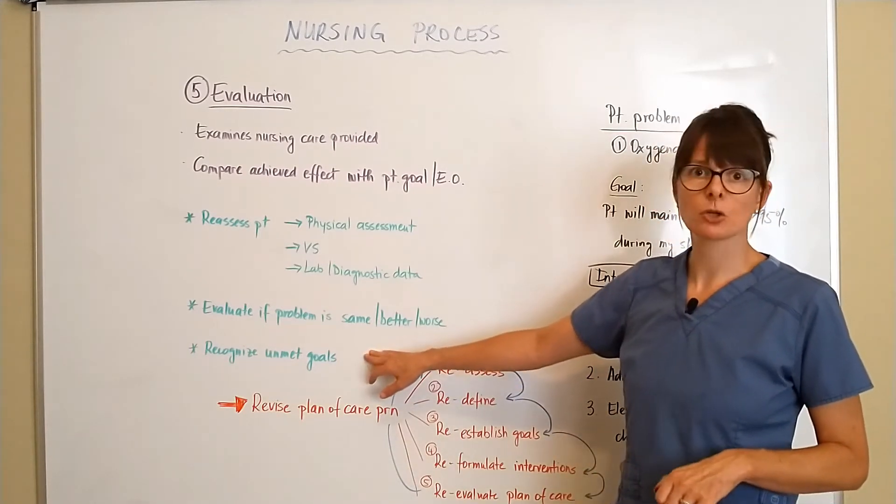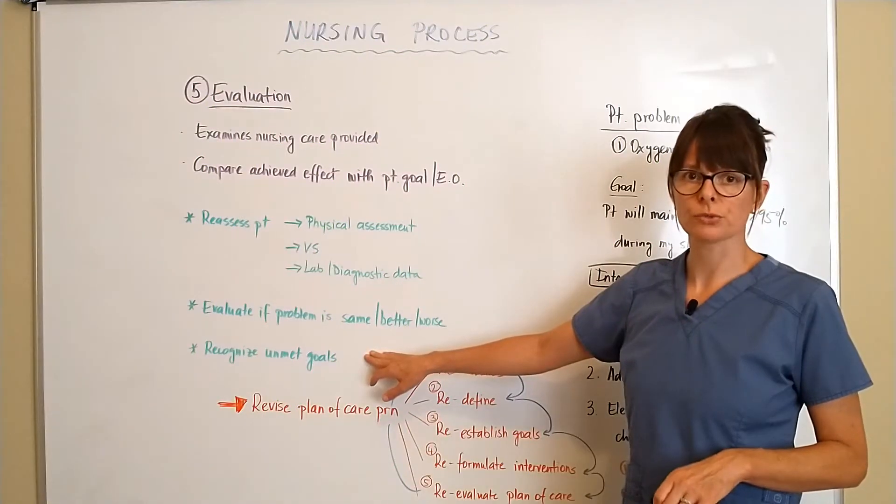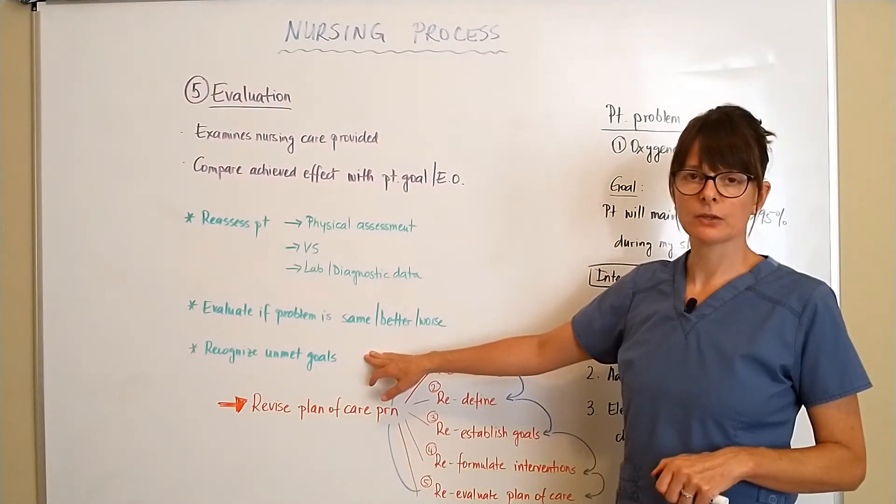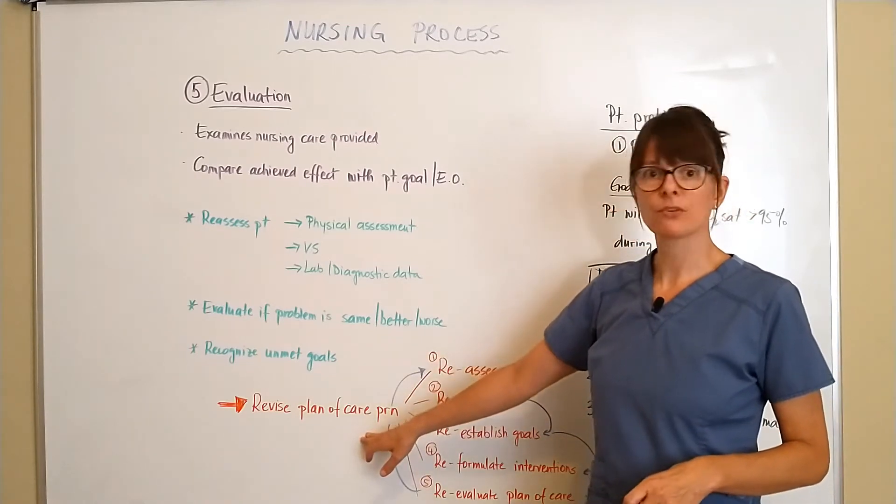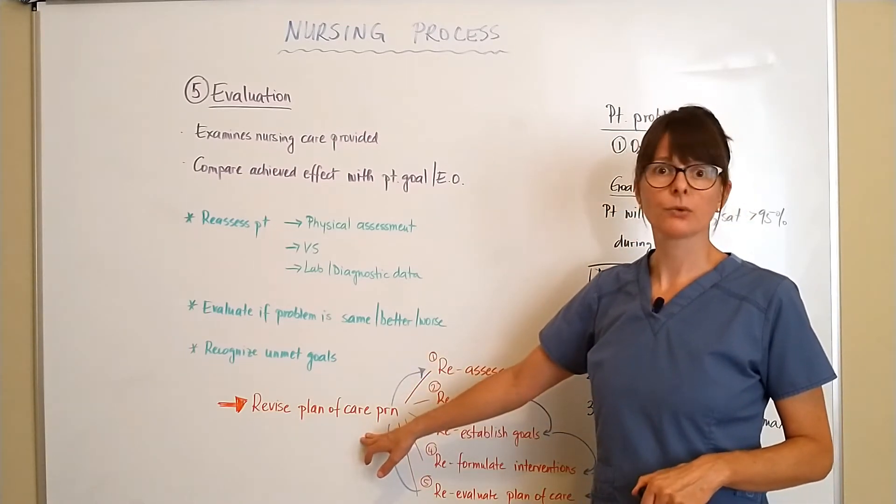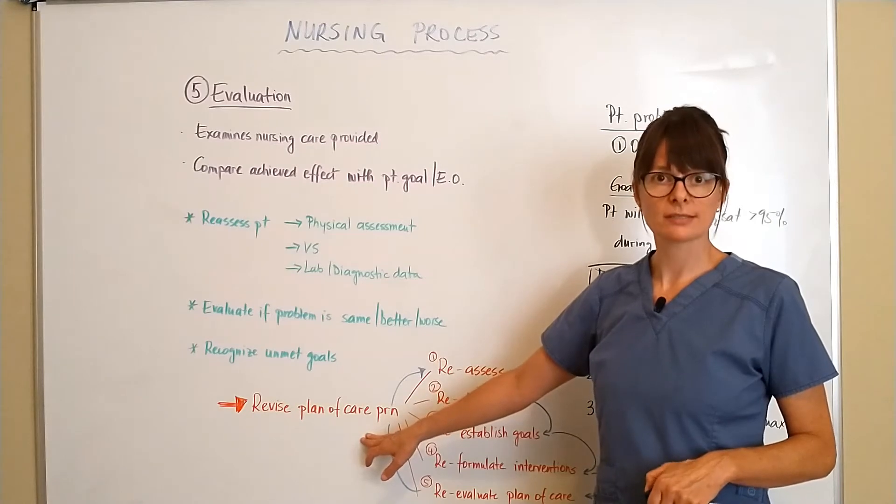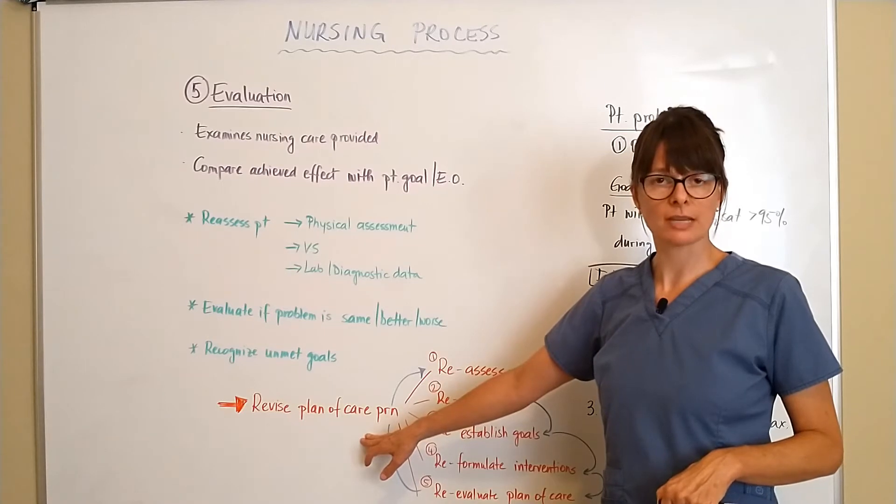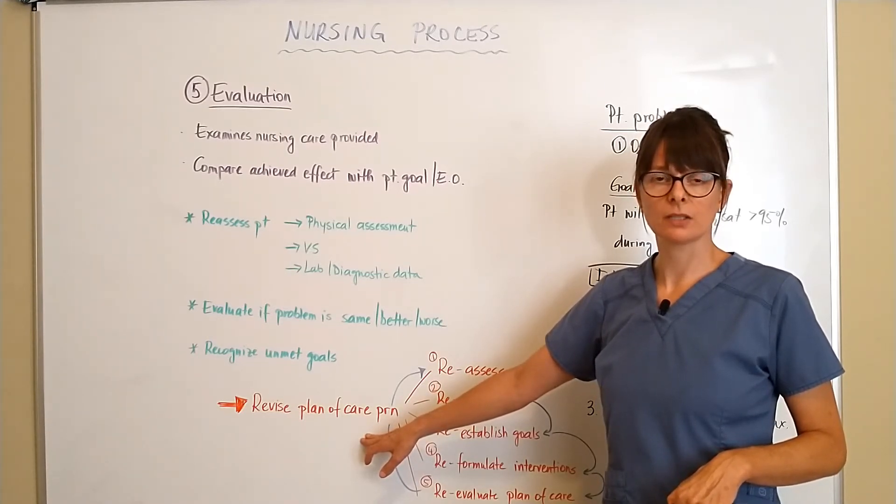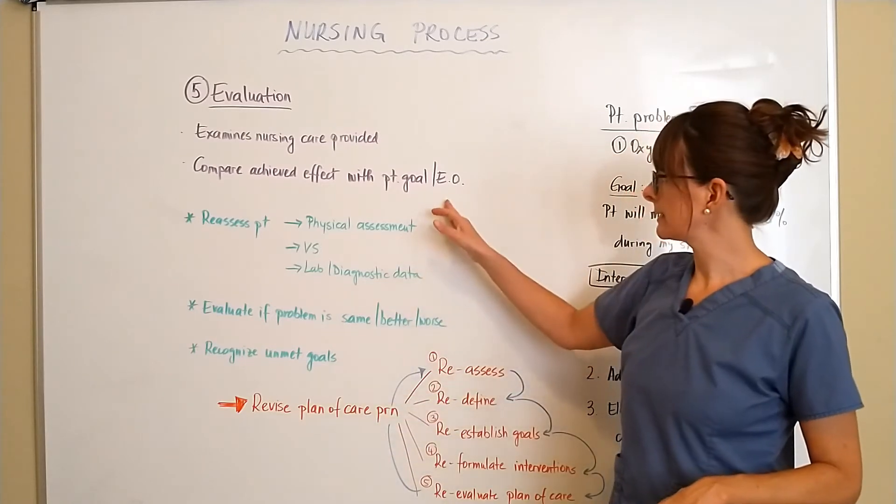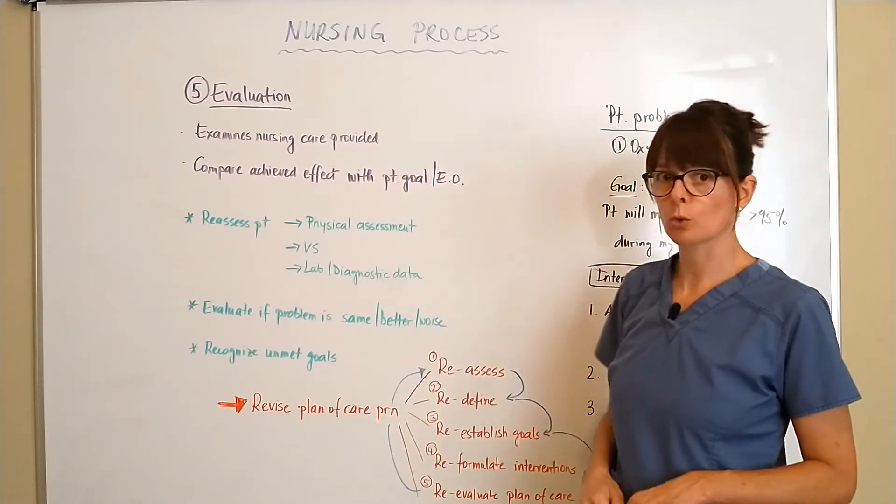The important part here is to recognize any unmet goals. If we identify that there are some goals that we haven't met then we have to maybe go back and revise the plan of care. Either revise the goal or reassess and find out what other problems there might be or revise the interventions if the interventions that we have taken didn't get us the expected outcome and didn't have us meet the patient goal.